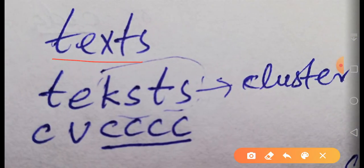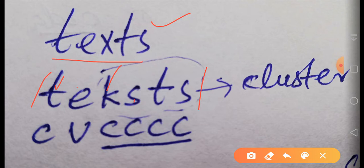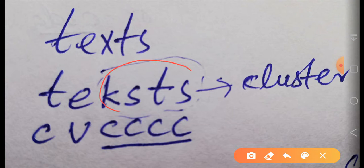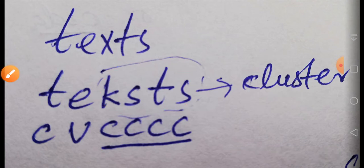Another example is 'texts' — the plural T-E-X-T-S. The phonemic transcription is /t/, /e/, /k/, /s/, /t/, /s/. The vowel /e/ acts as the nucleus. One consonant /t/ is in the onset, and four consonants /k/, /s/, /t/, /s/ form a consonant cluster in the coda.